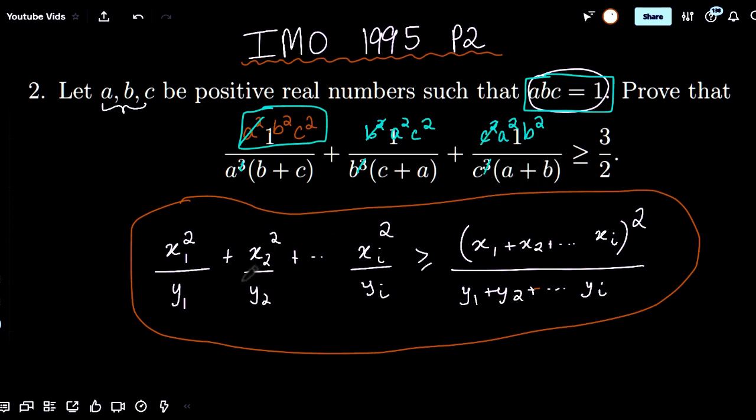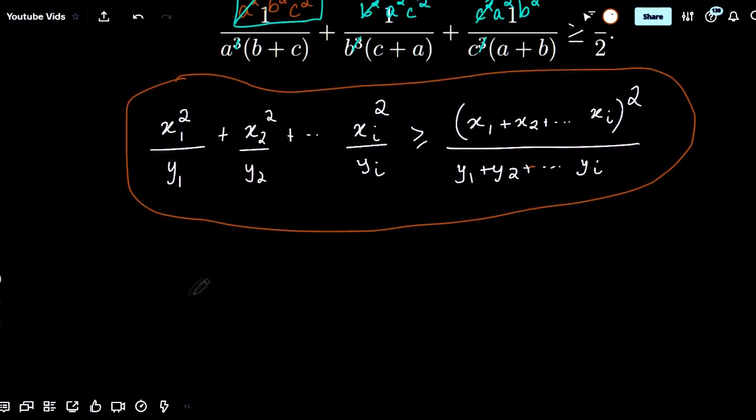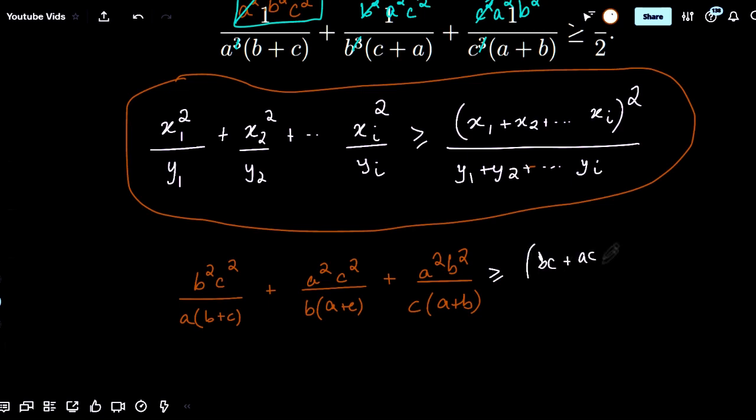Now this looks like a more manageable form to use T2's lemma on, and in fact if you did multiply the whole inequality by a squared b squared c squared, you'd be left with the expression being b squared c squared over a times b plus c, plus a squared c squared over b times a plus c, plus a squared b squared over c times a plus b. I can apply T2's lemma directly here to get that this is greater than or equal to bc plus ac plus ab whole squared over a times b plus c plus b times a plus c plus c times a plus b.